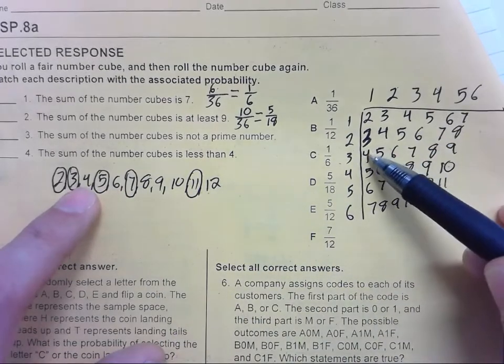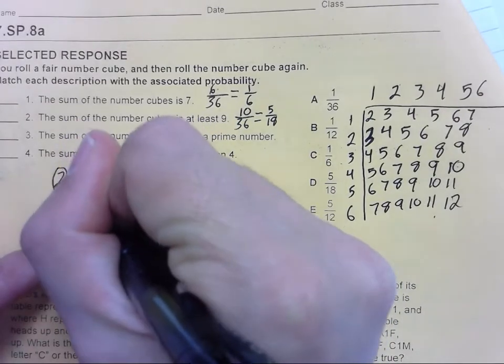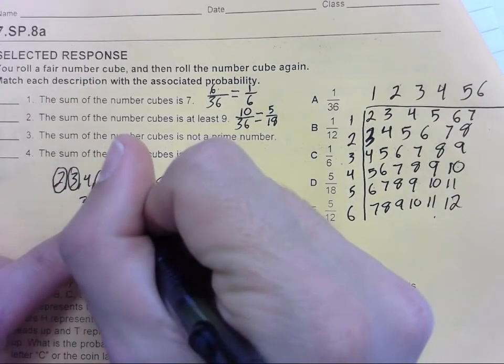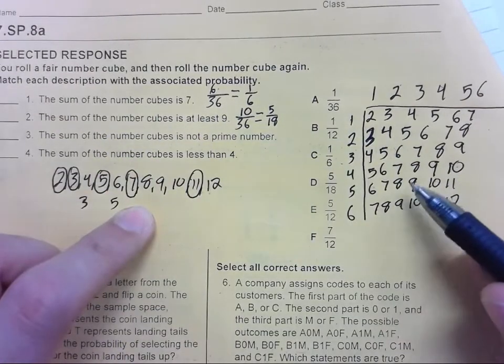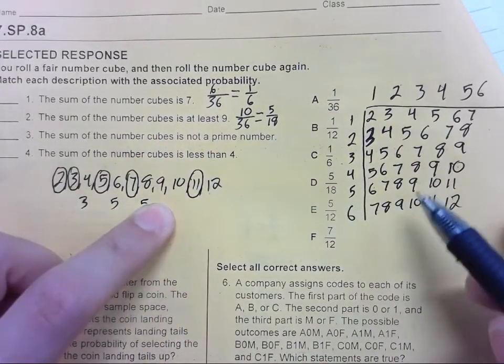How many 6s are there? 1, 2, 3, 4, 5. How many 8s are there? 1, 2, 3, 4, 5. How many 9s? 1, 2, 3, 4.